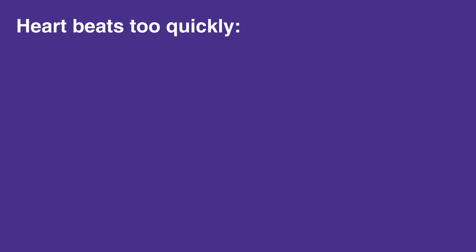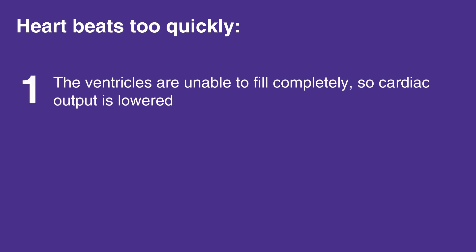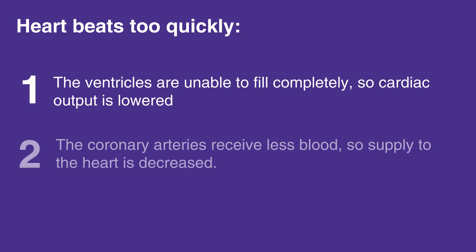When the heart beats too quickly, there is a shortened relaxation phase, which causes two main problems. The ventricles are unable to fill completely, so cardiac output is lowered, and the coronary arteries receive less blood, so supply to the heart is decreased.